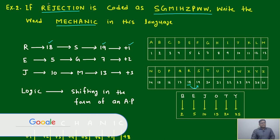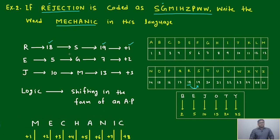Next, E is changing to G. So that is plus 2. E is 5 and G is 7, means it is changing by plus 2.